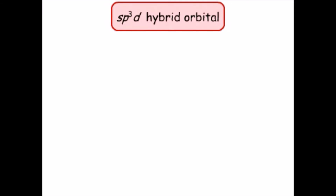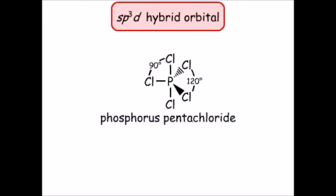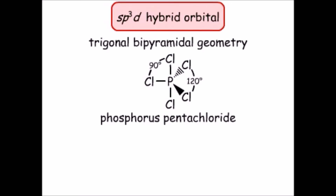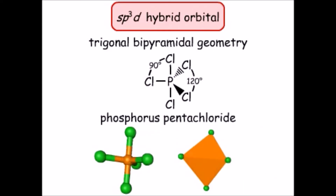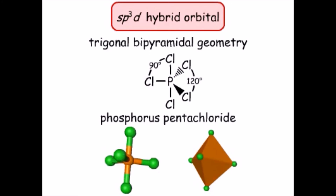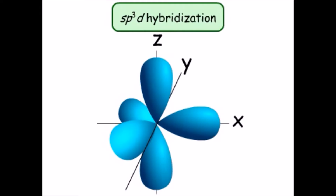The SP3D hybrid orbital is a combination of one S, all three P orbitals, and a D orbital. The phosphorus atom in phosphorus pentachloride is an example of an atom with SP3D hybridization. Phosphorus pentachloride has trigonal bipyramidal geometry — the five chlorine atoms around the phosphorus atom make a shape like two triangular pyramids joined together at their bases. There are five hybrid orbitals, the same as the number of contributing orbitals.